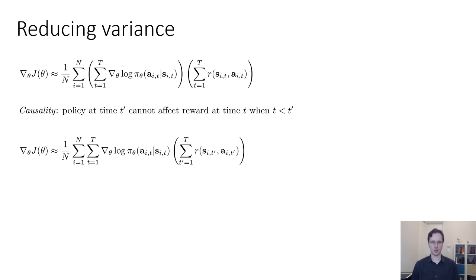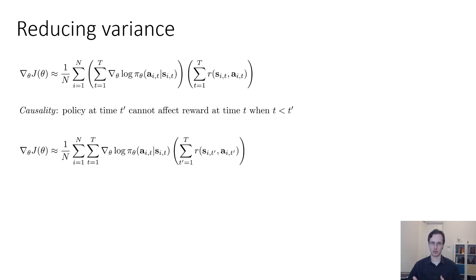At this point, you might start imagining how causality fits into this. We're going to change the log probability of the action at every time step based on whether that action corresponded to larger rewards in the present and future, but also in the past. Yet we know that the action at time step T can't affect rewards in the past, so those rewards will necessarily cancel out in expectation. If we generate enough samples, all the rewards at time steps t-prime less than T will average out to a multiplier of 0. We can prove this is true, and once we do, we can simply change the summation of rewards to sum from t-prime equals T to capital T — basically discarding all rewards in the past, since the current policy can't affect them.